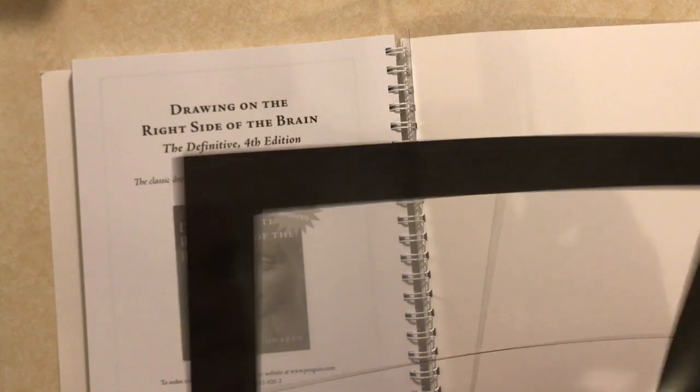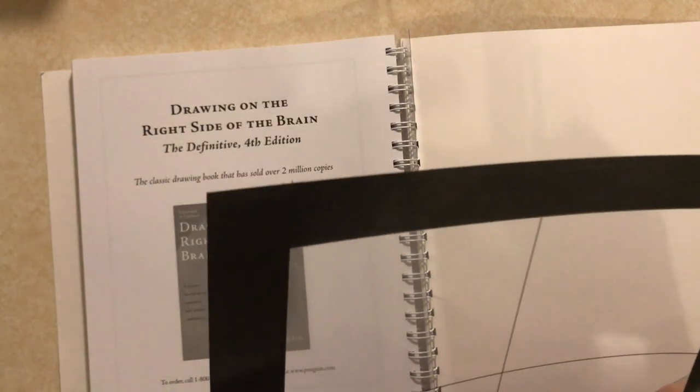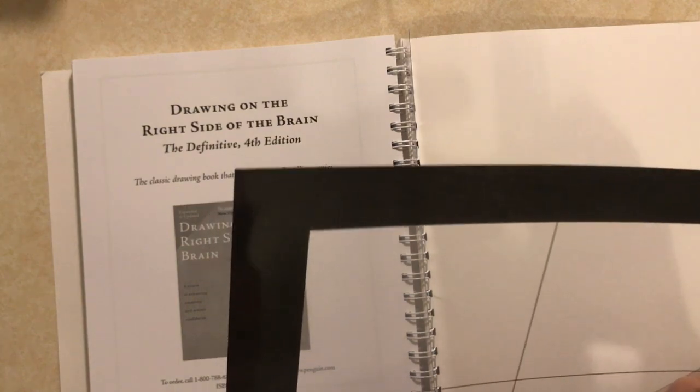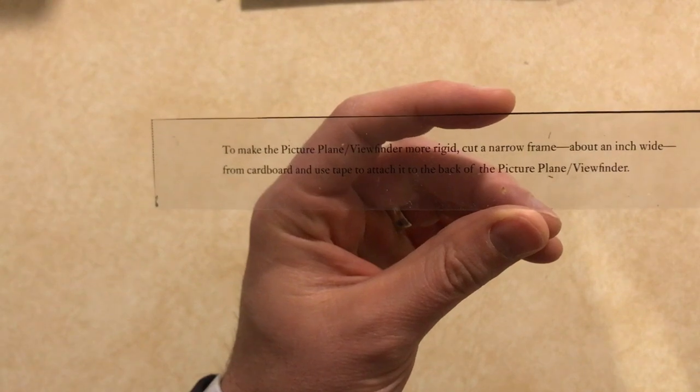The piece of plastic that she provides in the book is useful because it has crosshairs already permanently drawn on it. If you don't have this, then you'll have to just use a Sharpie or something else that can make a permanent set of crosshairs on your picture plane plastic.